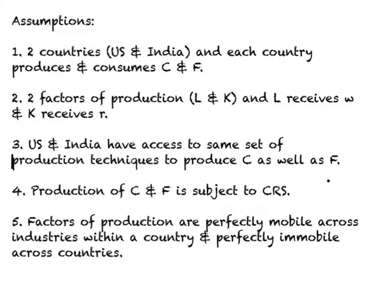The fifth assumption is that factors of production are perfectly mobile across industries, meaning the same wages will prevail in the two industries within a country. However, they are perfectly immobile across countries — labor and capital cannot move from one country to another — and this will permit us to have differences in wages and rents between the two countries.